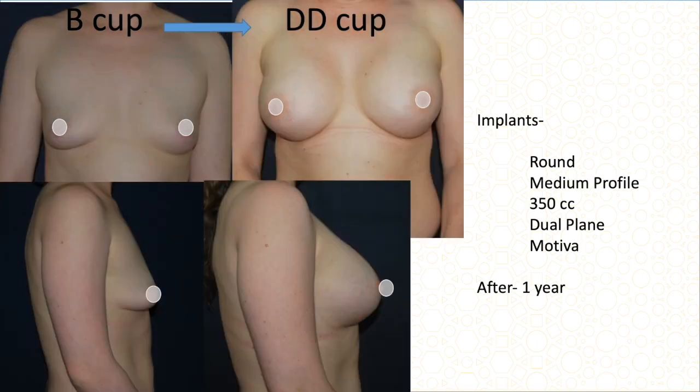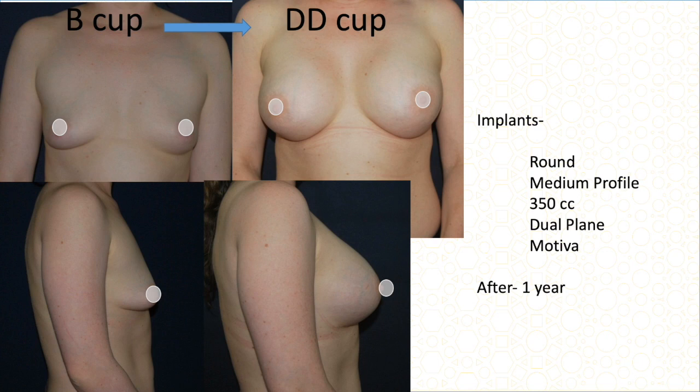This is another B cup patient with more than 2 inches of circumference difference. There is some loose skin and good stretchability of the skin with good fat in that area. I used a 350 cc implant with medium profile. Why medium profile? Because she already has a lot of fat in the chest — a higher profile would give too much upper fullness. Medium-profile dual-plane Motiva implant, one year after surgery — she went from B cup to double D cup.